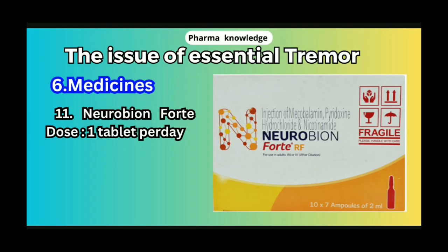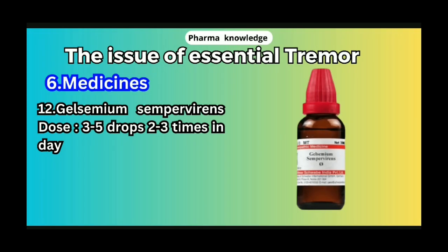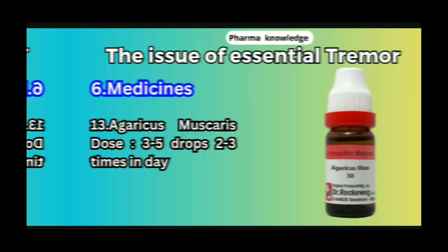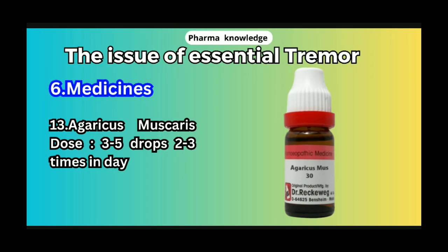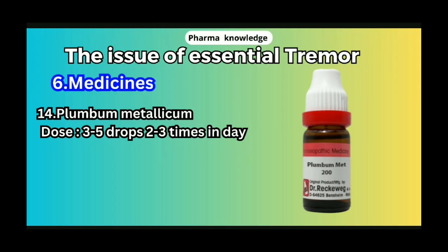11. Neuro supplement tablet. 12. Gelsemium — a homeopathic medicine, 2 to 3 drops, 2 to 3 times a day diluted in water. 13. Agaricus — 3 to 5 drops, 2 to 3 times a day diluted in water. 14. Plumbum Metallicum — 3 to 5 drops, 2 to 3 times a day diluted in water.